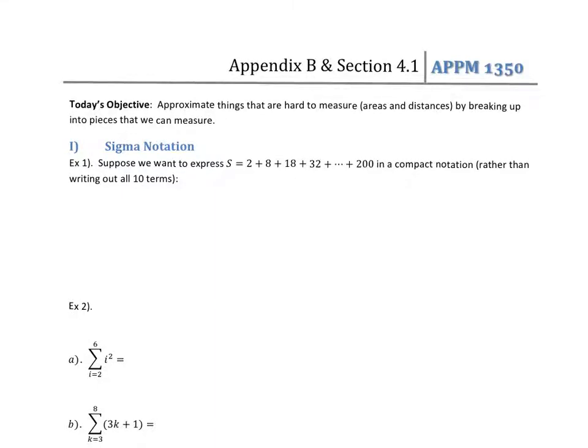This is a preview for section 4.1 in Appendix B. A big theme in section 4.1 is we're going to try to calculate things like areas under curves or total distance traveled given velocity, where things are changing — where my curve or velocity is not constant. That can be a hard problem, so our trick is to chop up whatever we're calculating into little tiny pieces where we can approximate it easily, then add back up our total approximations to get the overall answer.